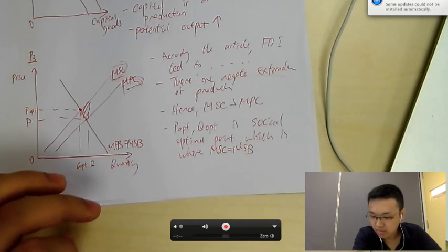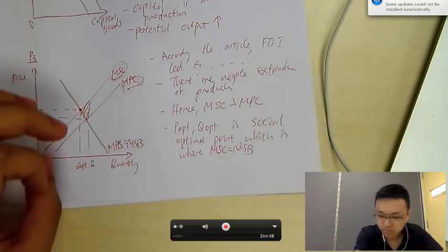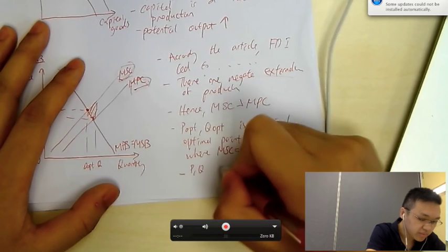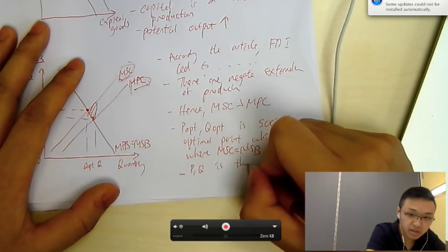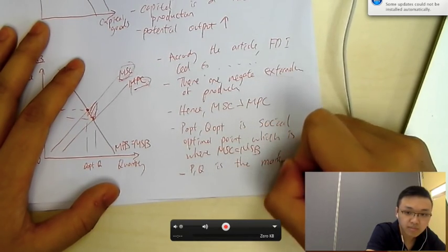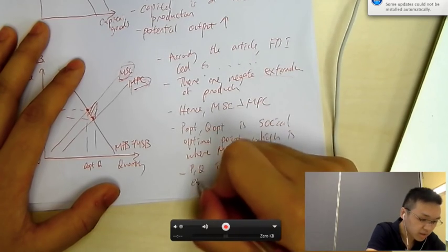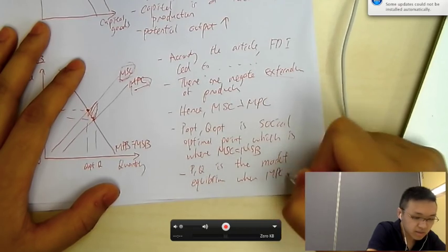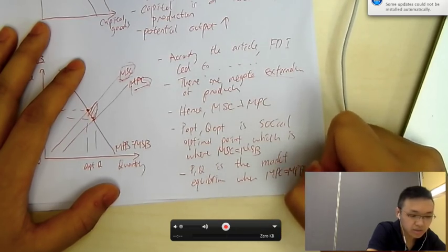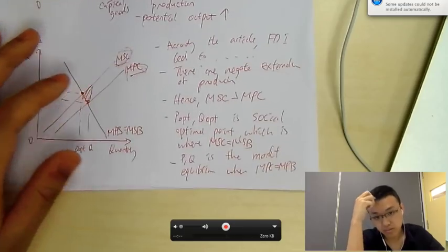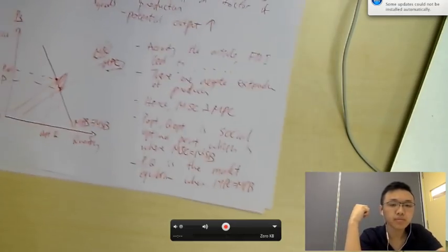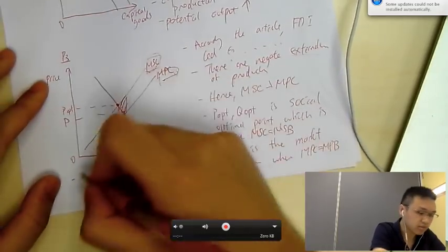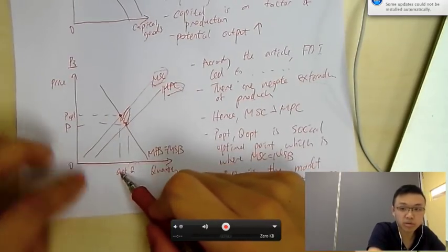How about... The second point is this point, okay? The P and Q is the market equilibrium. Okay, it's the market equilibrium. Where MPC equals MPB. Okay, so, hence, what can we say? There's overproduction, right? Because the free market equilibrium is greater than social optimal.